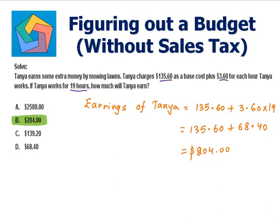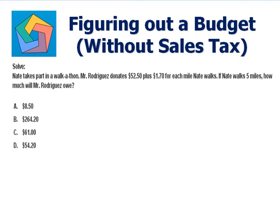Next problem: Nate takes part in a walkathon. Mr. Roderich donates $52.50 plus $1.70 for each mile Nate walks. If Nate walks 5 miles, how much will Mr. Roderich owe?